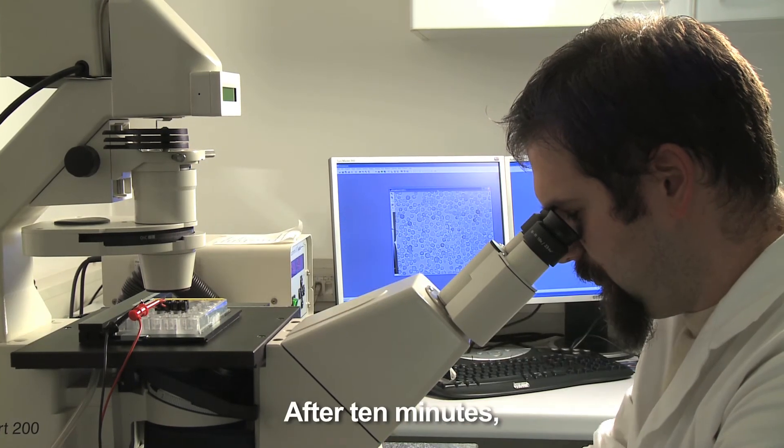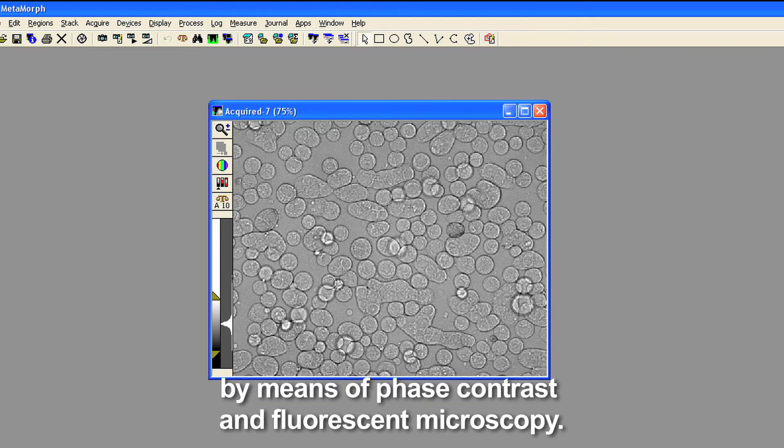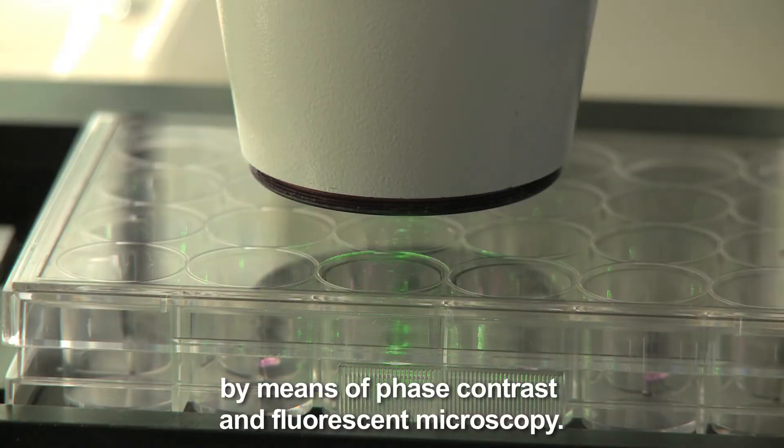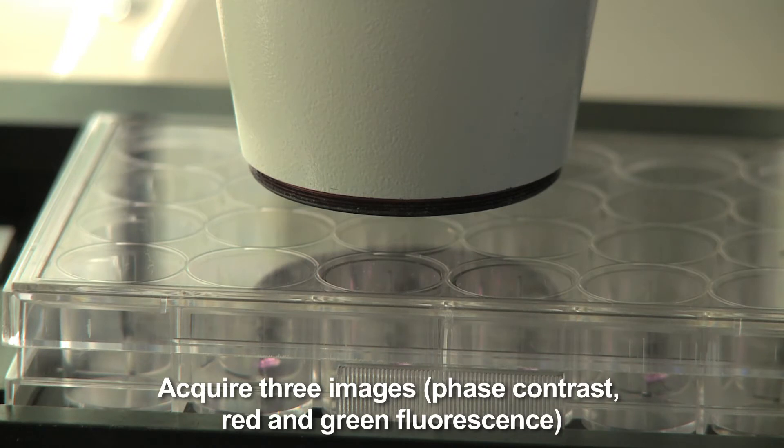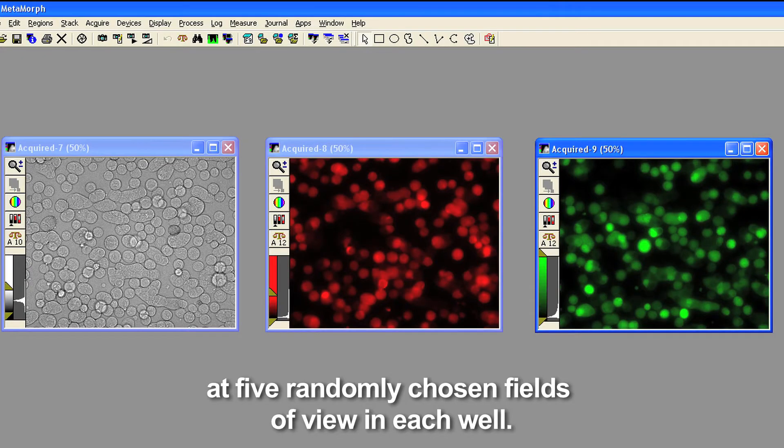After 10 minutes, determine fusion yield by means of phase contrast and fluorescent microscopy. Acquire three images: phase contrast, red and green fluorescence, and five randomly chosen fields of view in each well.